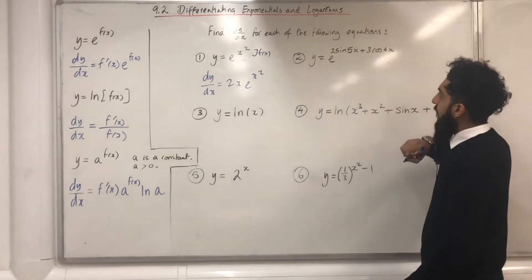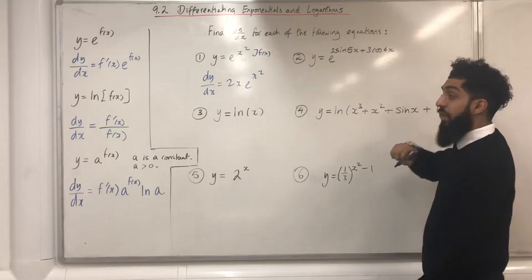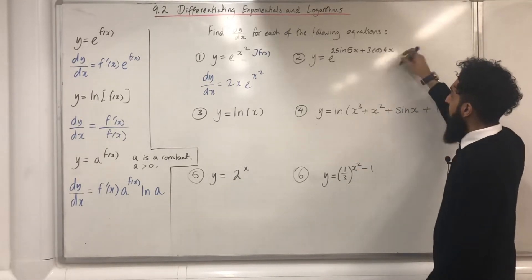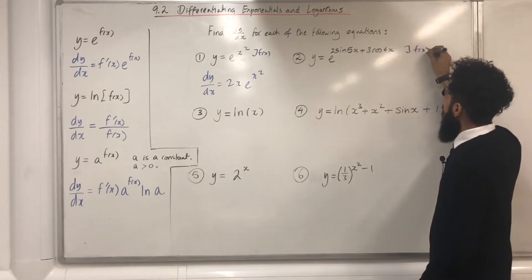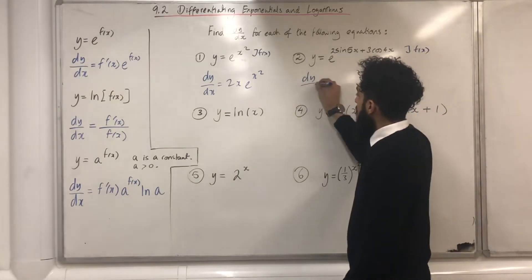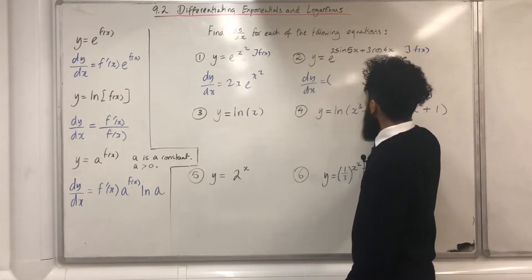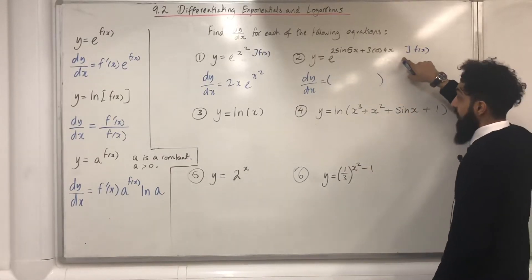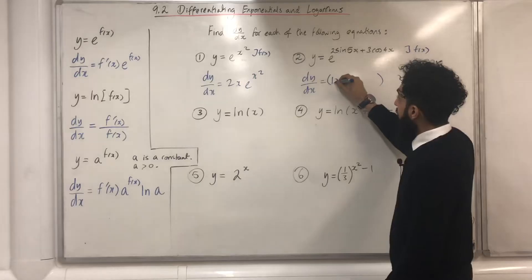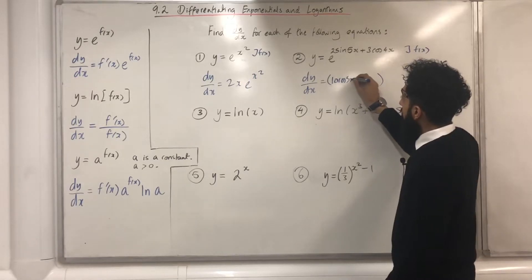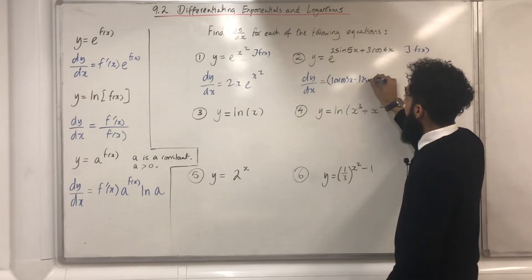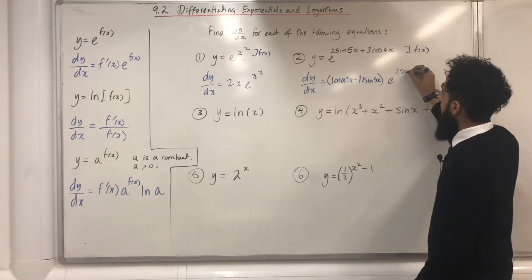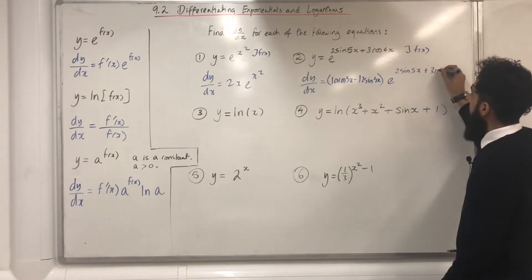Question 2: y equal e to the power (2sin5x + 3cos4x). The 2sin5x + 3cos4x is my f(x). dy/dx is equal to — I differentiate 2sin5x + 3cos4x and I obtain 10cos5x − 12sin4x — multiplied by e to the power (2sin5x + 3cos4x).